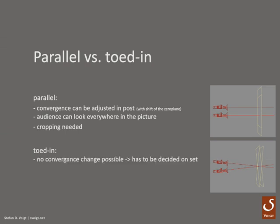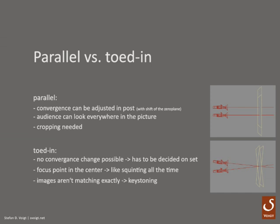On a toed-in setup the convergence has to be decided on set, so you can't adjust the convergence in post. Without modifications in post you also have a convergence point only in the center because your cameras are twisted toward this point. It's like squinting all the time and your audience will only have a good stereo impression when looking to that specific point. This is also because the images aren't matching exactly — you've got keystoning and depth plane curvature. Let me show you what this is.